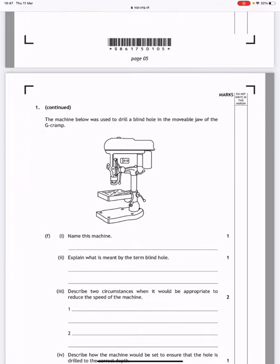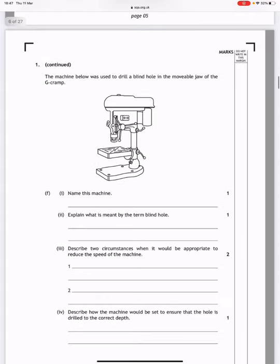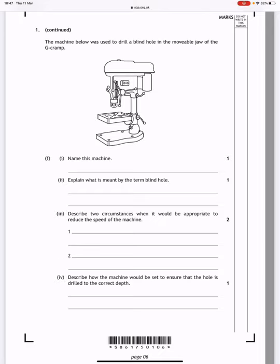The machine below was used to drill a blind hole in the movable jaw of the g-cramp. Name the machine: it's either a pedestal drill or a pillar drill. Explain what is meant by the term blind hole. Well this is a hole that doesn't go all the way through the material.